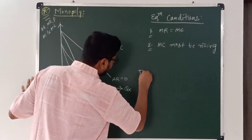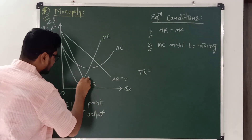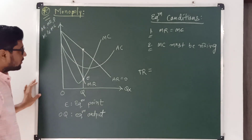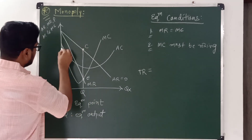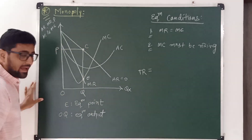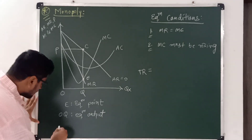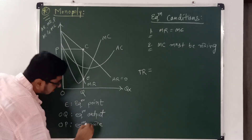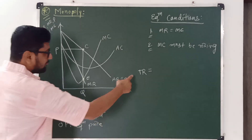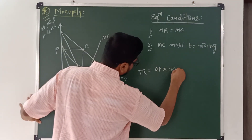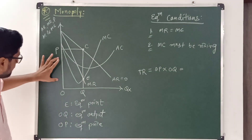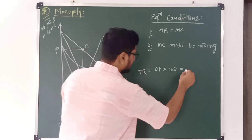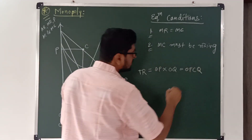At this equilibrium output, if I extend this line it touches the average revenue curve at point C, and therefore the price is OP. So OP is the equilibrium price. Total revenue is OP multiplied by OQ, that is area OPCQ.